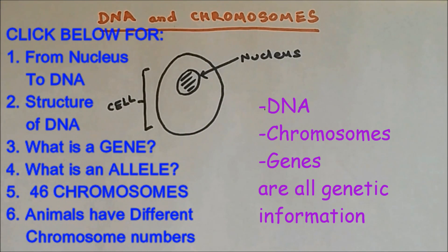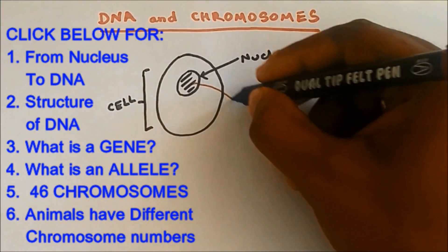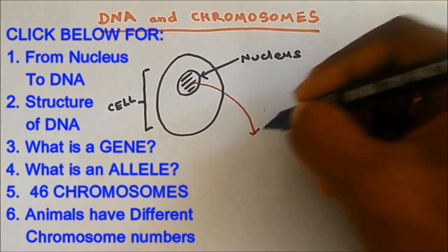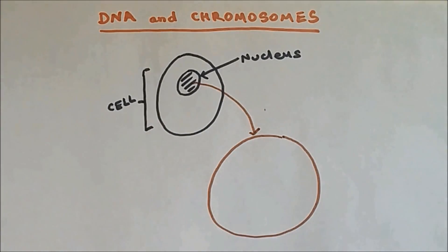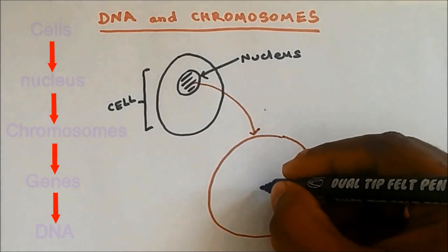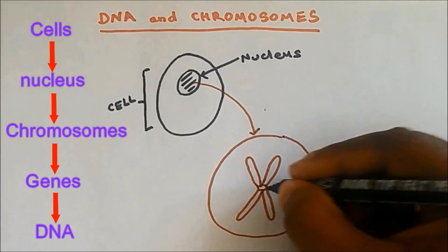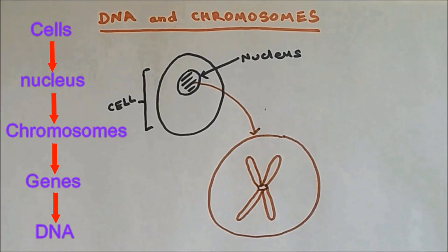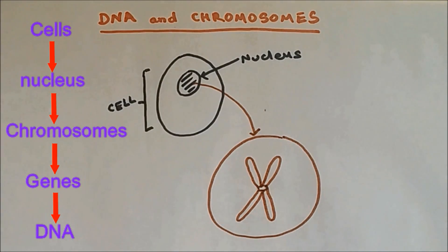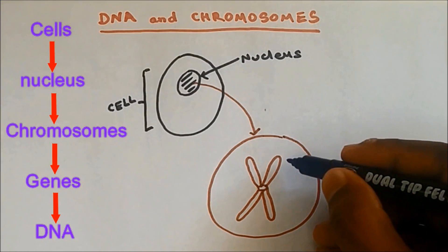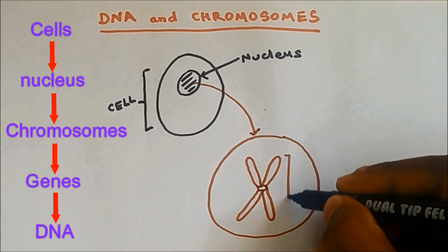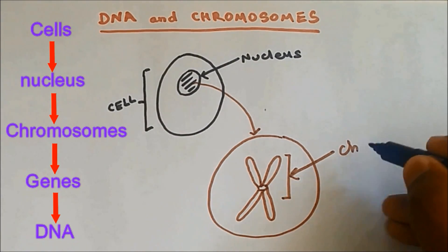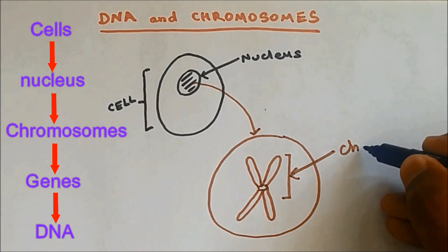If you take a microscope and expand inside the nucleus, you will find chromosomes. Let me show you this with the diagram — if I expand into the nucleus, we will find this structure, and it is called a chromosome.